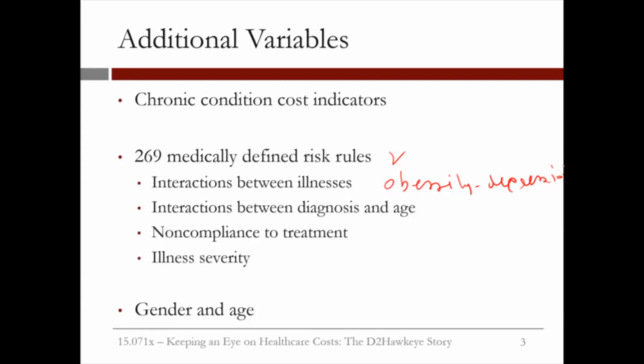Additional rules addressed the interaction between diagnosis and age — for example, patients more than 65 years old with coronary artery disease. Other rules covered non-compliance with treatment, such as no fulfillment of a particular drug order. And finally, illness severity — for example, severe depression as opposed to regular depression.